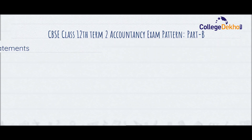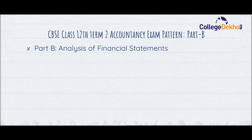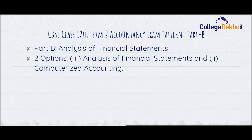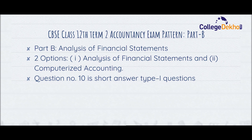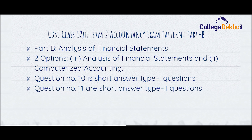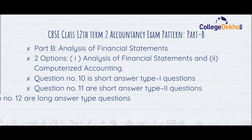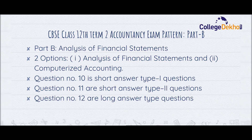Now, let us look at the exam pattern for Part B. Part B will be conducted for analysis of financial statements. There will be two options given in Part B: the first option will be for analysis of financial statements and the second will be for computerized accounting. Candidates can choose any one of the options. Question number 10 will be a Short Answer Type 1 question, question number 11 will be a Short Answer Type 2 question, and question number 12 will be the Long Answer Type question.